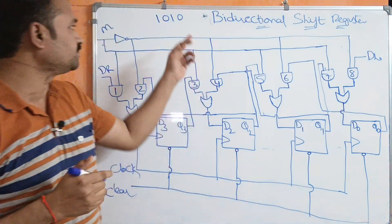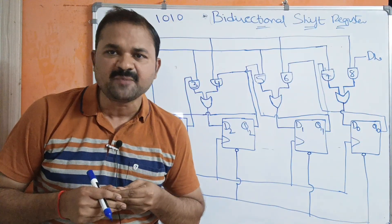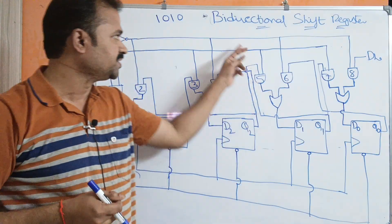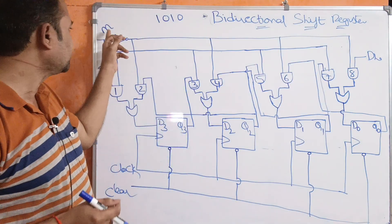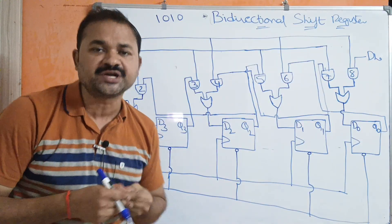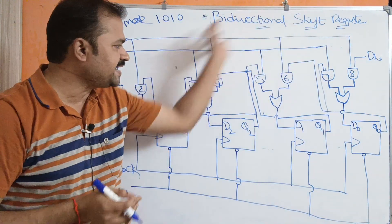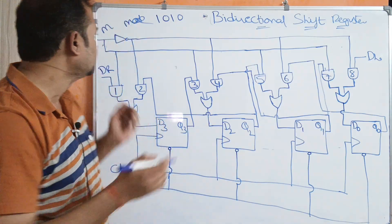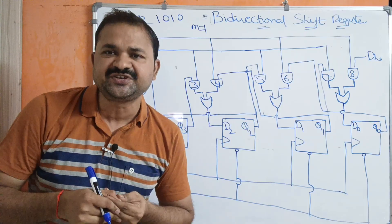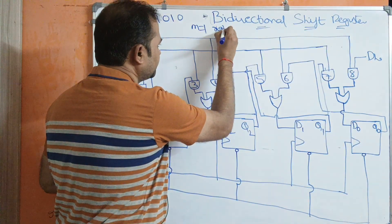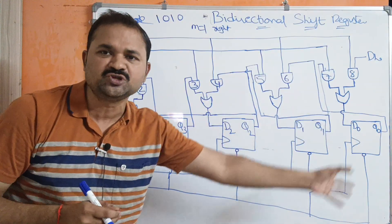Let us discuss about bi-directional shift register. A shift register which is capable of shifting data in both directions is called a bi-directional shift register. Here M means mode control bit. The mode control bit controls this circuit. If mode control bit is 1, then this circuit will perform shift right operation, meaning the contents of the register will be shifted one position towards the right.